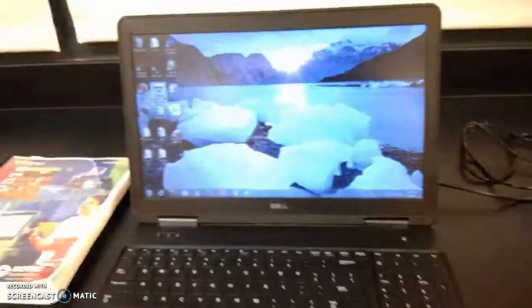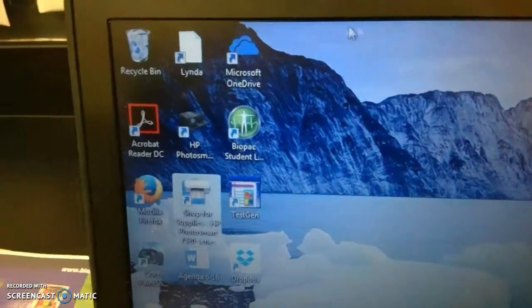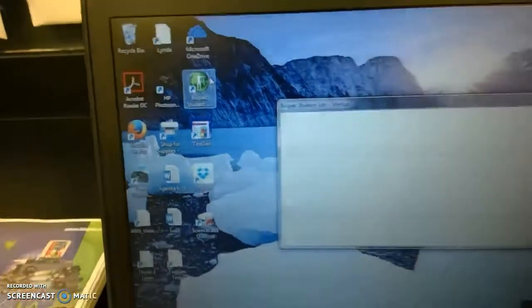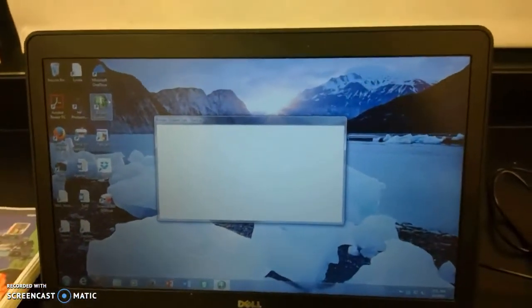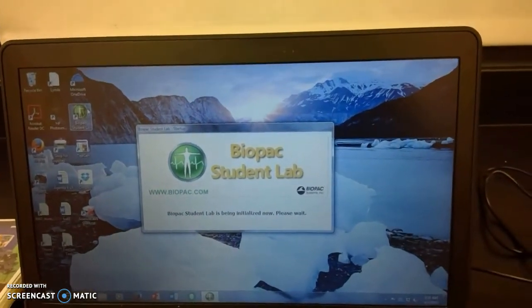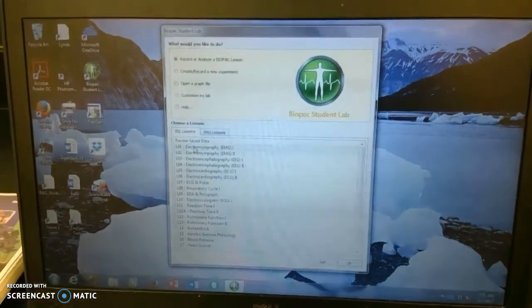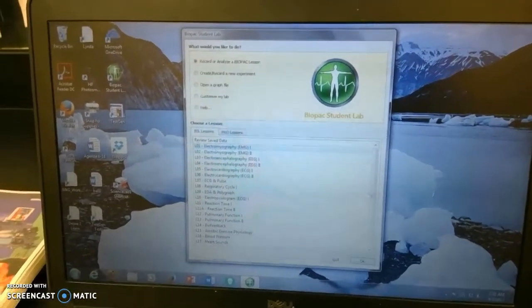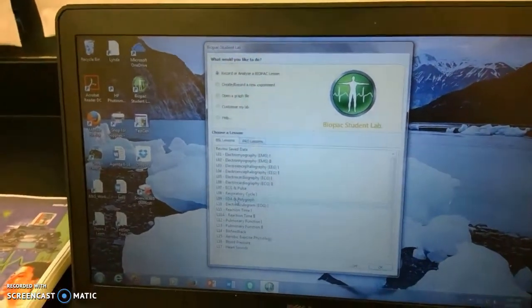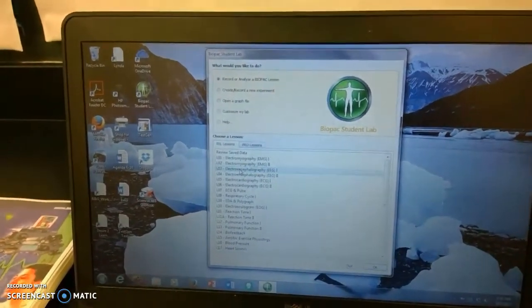Now, on the laptop, if it doesn't say anything, you need to come to this icon and click Biopac Lessons. It will ask you for a name. Put your group's name. Put some name because sometimes it crashes, but it might have saved the data. Now, we are going to be doing Lesson 1, Electromyography, Lesson 9, EDA and Polygraph, and we are going to be doing EEG1, which is Lesson 3.